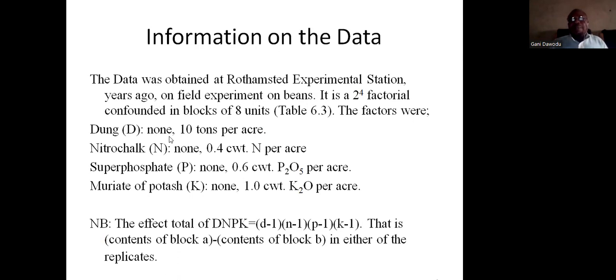Dung means absent, and whenever it is present, it is present in 10 tons per acre. Nitrochalk, absent, and whenever it's present, it's 0.4 hundredweight nitrogen per acre. Superphosphate, none, and when it is present, 0.6 hundredweight P2O5 per acre. Muriate of potash, none, and when it's present, 1 hundredweight potash per acre.